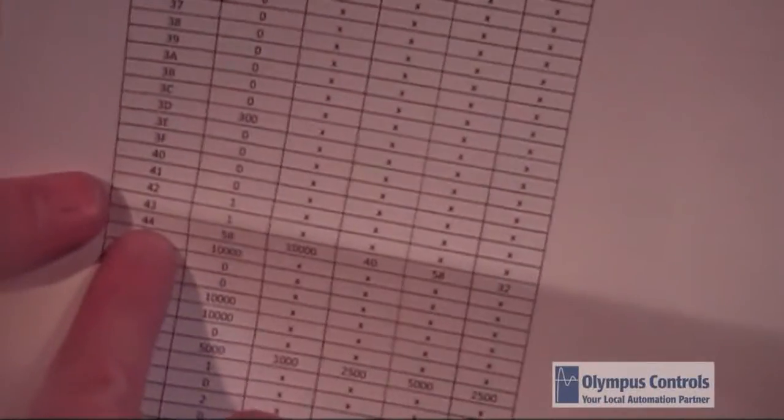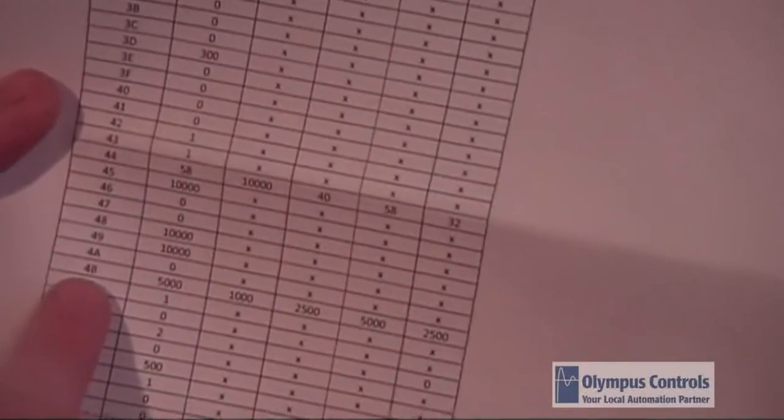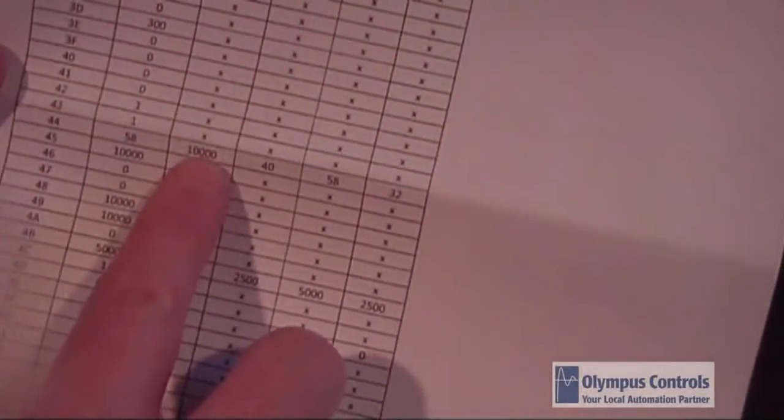If now we want to change to a cutter axis, we'll see here on page 2 that parameter 44 and parameter 4B require changes to 10,000 and 1,000. Other than that, there are no changes required in this drive to be configured as a cutter. So I'll now show you how to do that.